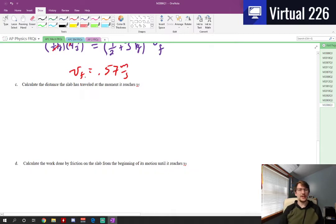In part C we need to calculate the distance the slab has traveled at the moment it reaches VF. Now you could approach this using kinematics. You could find the force being applied to the slab from the block. Set that equal to MA, find different accelerations, use kinematic equations. You can do that. We're going to use energy instead because it's going to be way easier for this problem. And I'll show you why after we solve it.